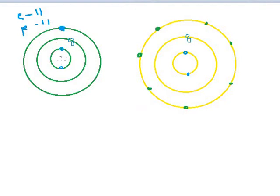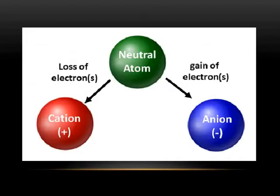Protons are present inside the nucleus. Since the number of electrons is 11 and protons is also 11, if you subtract 11 minus 11, it will be 0. So sodium has no charge — it is a neutral atom. You do not have a charged particle, so it is known as neutral.